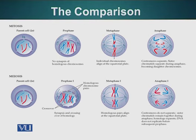In mitosis, we have one cell division, so the end result is an equal amount of DNA in the two daughter cells. In meiosis, the cells divide twice and result in half the amount of DNA in the daughter cells.